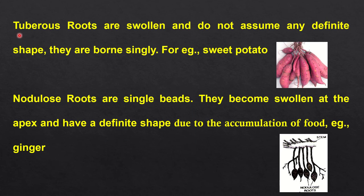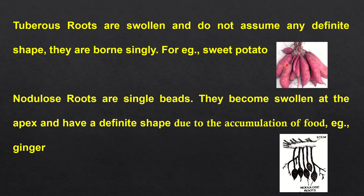Tuberous roots are swollen and they do not have any definite shape, and they are borne singly. Looking at this picture, this is the picture of sweet potato. This type of tuberous root is found in sweet potato — they become swollen, do not have any definite shape, and they occur singly.